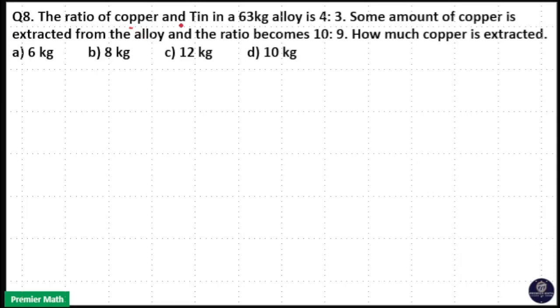The ratio of copper and tin in a 63 kilogram alloy is 4 to 3. Some amount of copper is extracted from the alloy and the ratio becomes 10 to 9. How much copper is extracted?